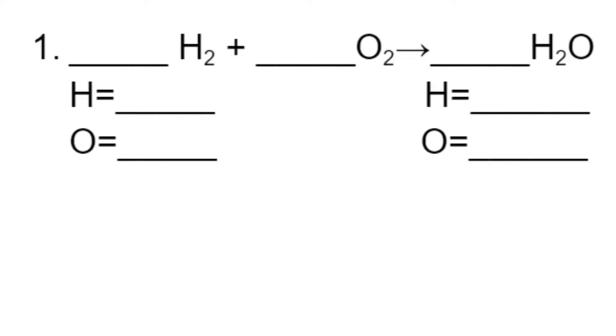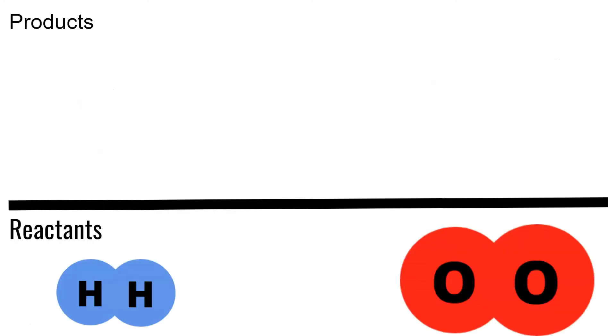So this is our first example problem. This is H2 plus O2 and it yields H2O. Now these are our reactants. H2, which is hydrogen gas, is combining with O2, which is oxygen gas. And then this is the product. So they combine together and form water. So let's see how that looks.